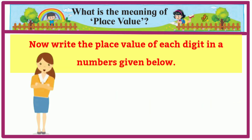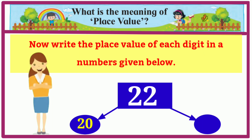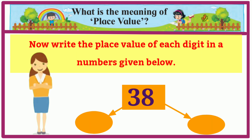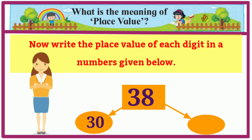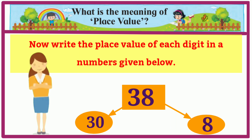Now write the place value of each digit in the numbers given below. 22: 2 is in the tens place so the place value of 2 is 20, and 2 is in the units place so its place value is 2. 38: 3 is in the tens place so the place value of 3 is 30, and 8 is in the units place so its place value is 8.